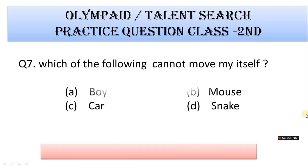Number 7: Which of the following cannot move by itself? A. Worm, B. Mouse, C. Card, D. Snake. Correct answer is Option C. Card.